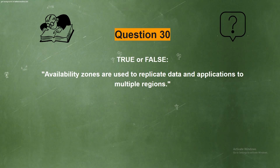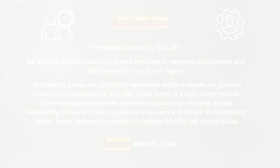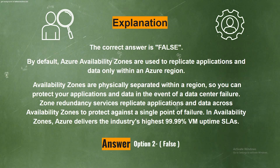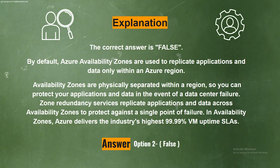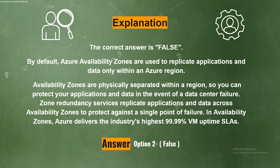Question 30. True or False? Availability Zones are used to replicate data and applications to multiple regions. The correct answer is Option 2, False. By default, Azure Availability Zones are used to replicate applications and data only within an Azure region. Availability Zones are physically separated within a region, so you can protect your applications and data in the event of a data center failure. Zone Redundancy Services replicate applications and data across Availability Zones to protect against a single point of failure. Azure delivers an industry-leading 99.99% VM uptime SLA with Availability Zones.